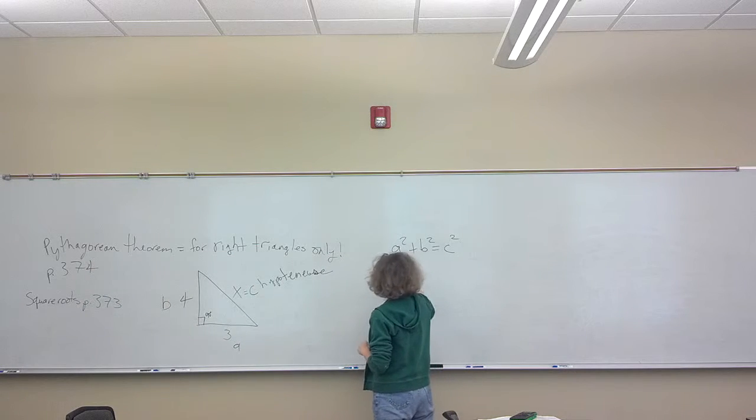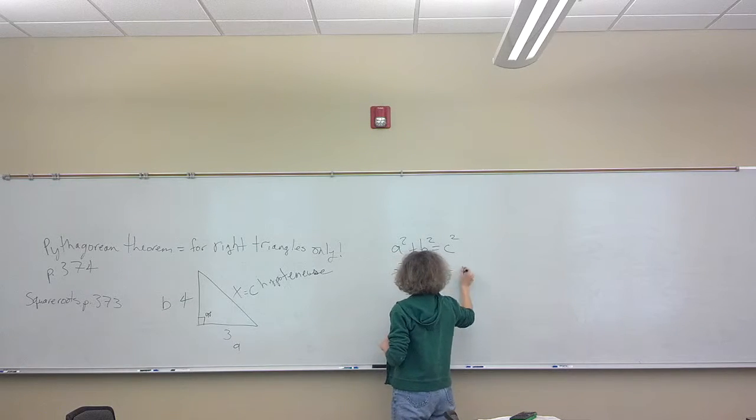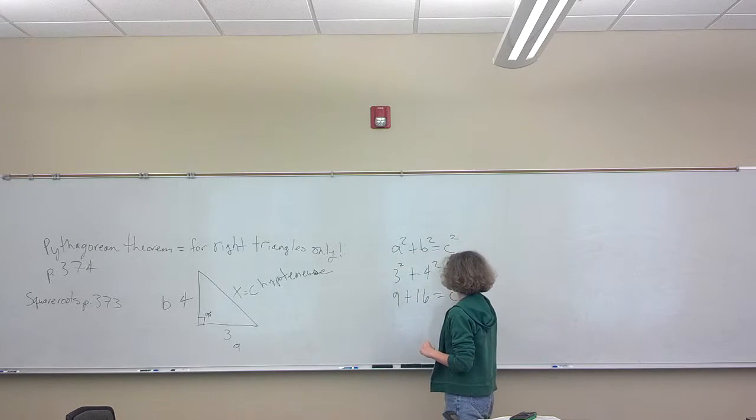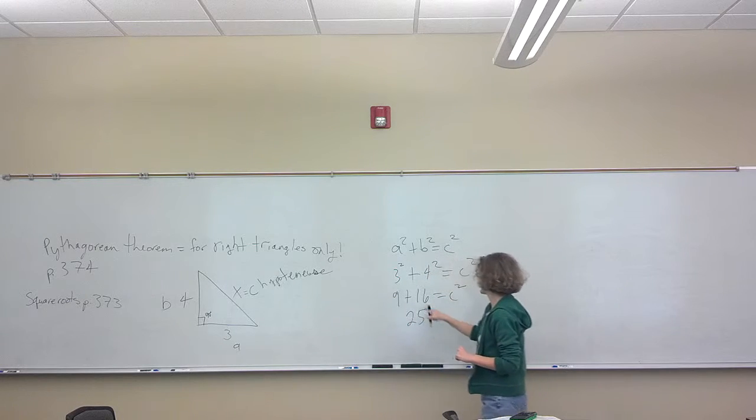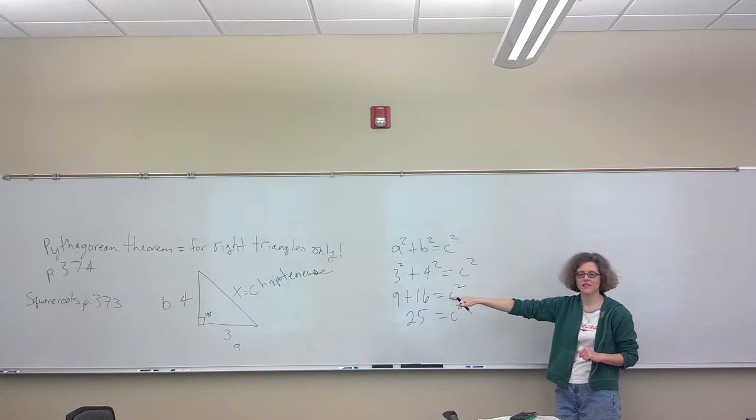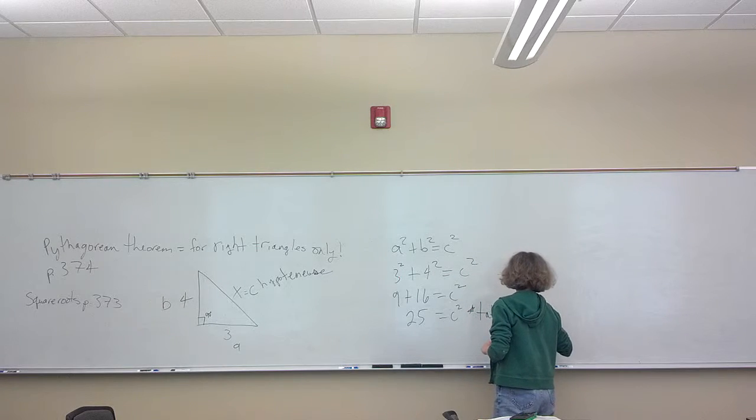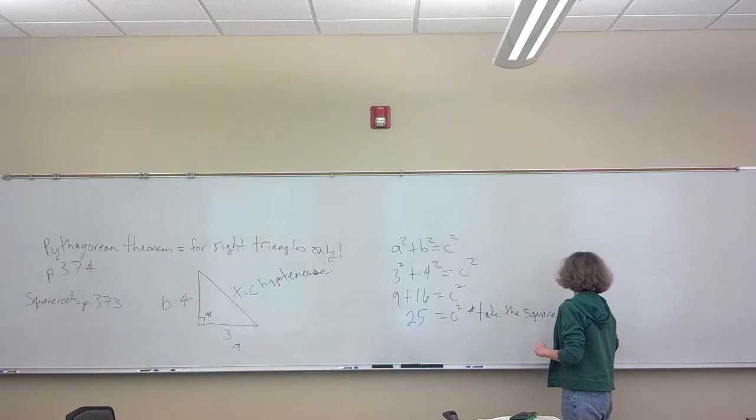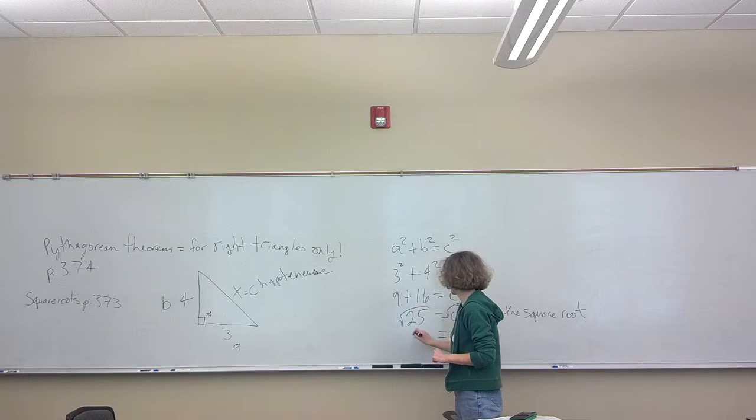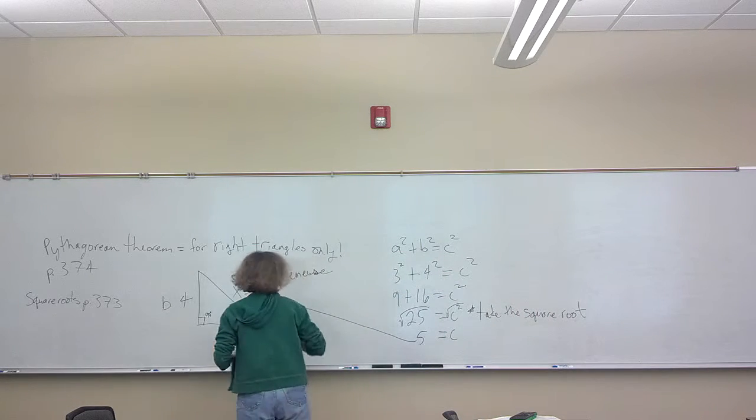So if I'm solving for c here, I said a is 3, so a is 3 squared plus b is 4, 4 squared equals c squared. So I've got 9 plus 16 equals c squared. So add these together, get 25. That equals c squared. I don't want c squared, I just want plain c. So at this point, I have to take the square root. The square root of c squared is c. The square root of 25 is 5. So that's our answer here. c is equal to 5, just like we found before.